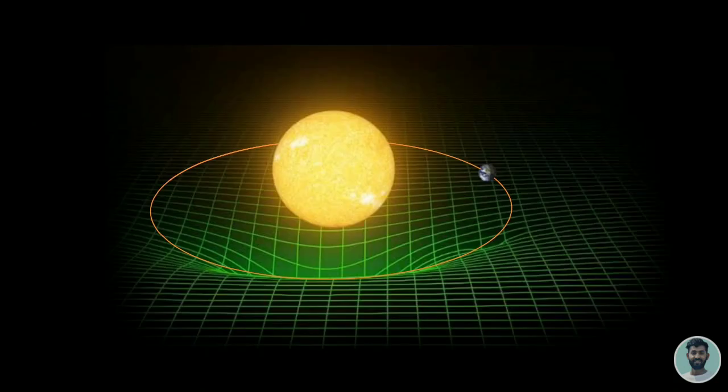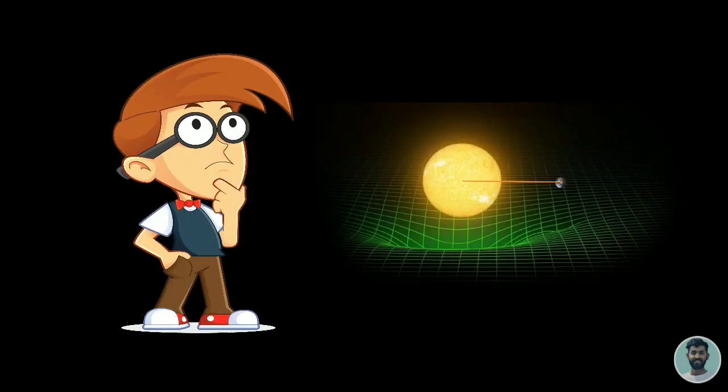Earth moves in elliptical orbit around the sun. But that path is straight line in space time. Now you can argue that why the earth moves in straight line even when there is external gravitational force acting on it.